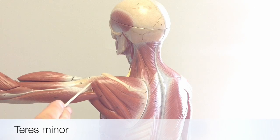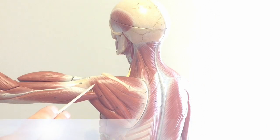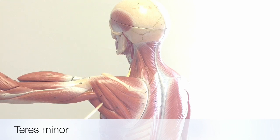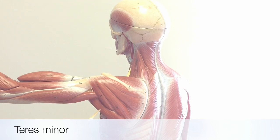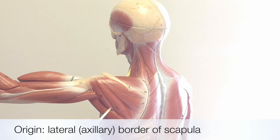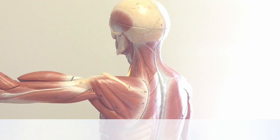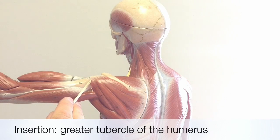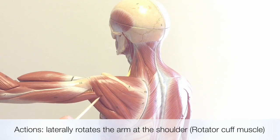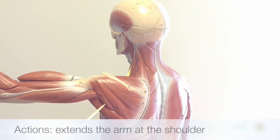This is the teres minor, located just inferior to the infraspinatus. Teres is a name that describes the rope-like shape of this muscle. Minor is a reference to it being the smaller of the two teres muscles; the teres major is located just below the teres minor. Its origin is on the lateral or axillary border of the scapula. Like the supraspinatus and infraspinatus, it inserts onto the greater tubercle of the humerus. The teres minor is also one of the rotator cuff muscles and, like the infraspinatus, helps to laterally rotate and extend the arm at the shoulder.